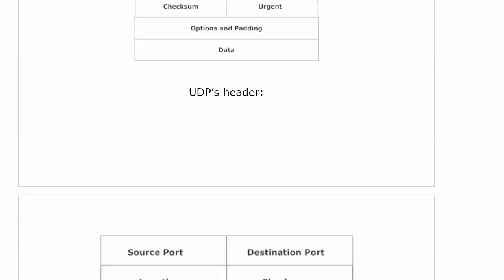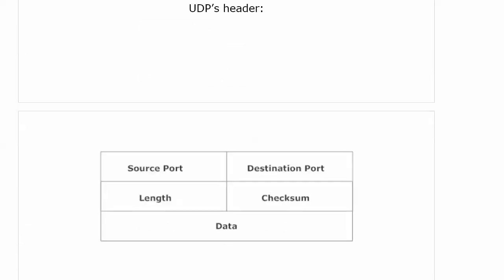Especially compared to UDP's header, which is source port, destination port, length, and checksum — and that's it. The data's right behind that.